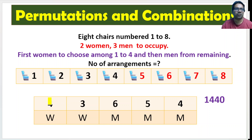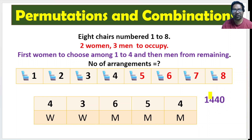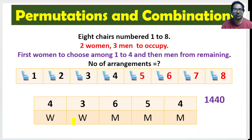So what is the total number of arrangements? That is 4 × 3 × 6 × 5 × 4, which is equal to 1440. It is a simple problem — we just have to arrange women first and then men, and not get confused.